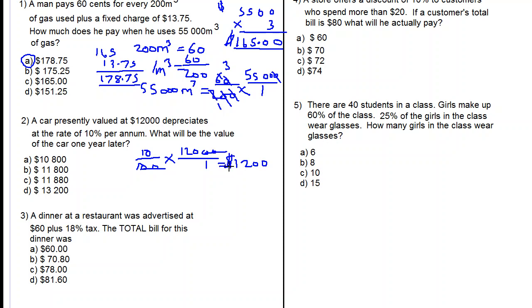120 times 10 is 1200. So this is how much money the car would depreciate by in one year. Per annum means one year. So after one year, the car will be valued 12,000 subtract 1200. So we work that out and we get 10,800, which is option A, our answer.